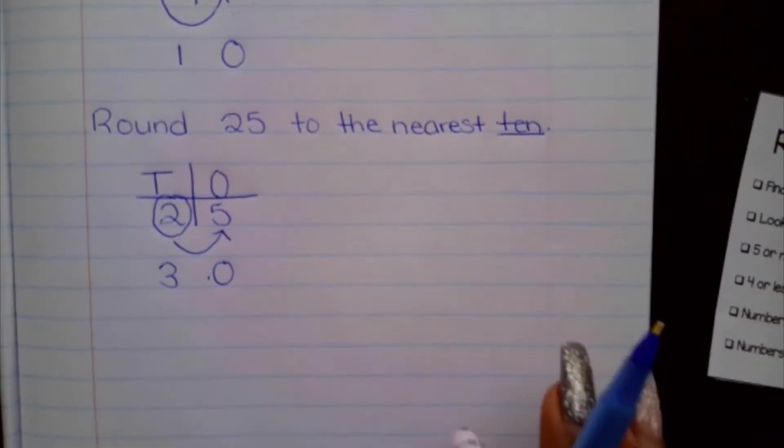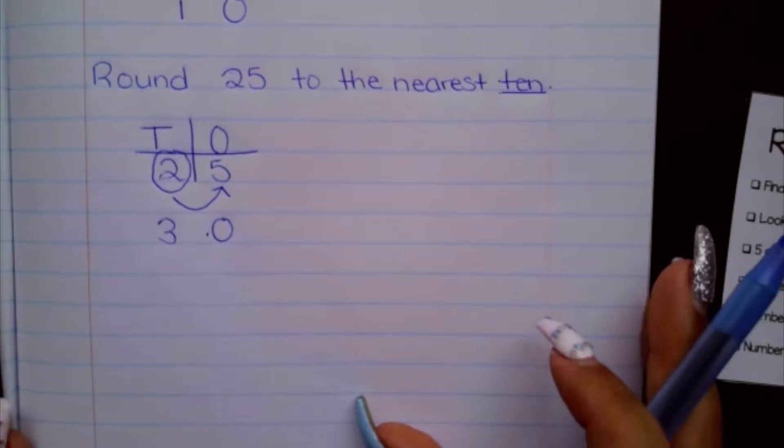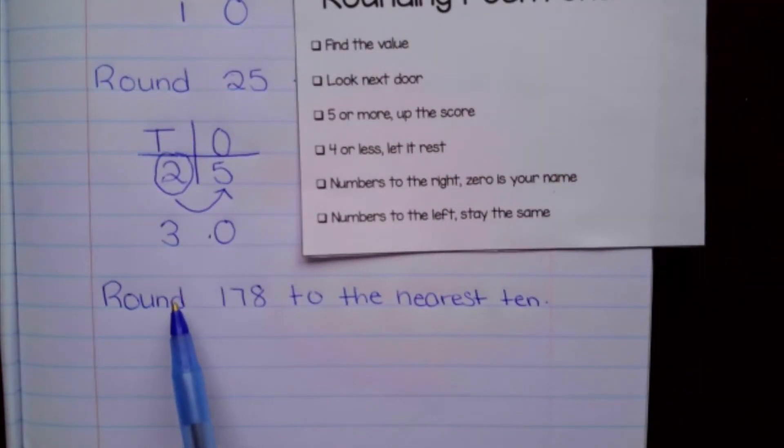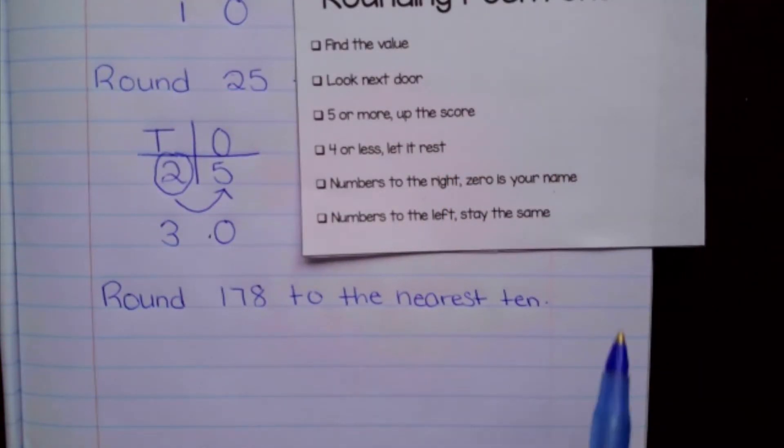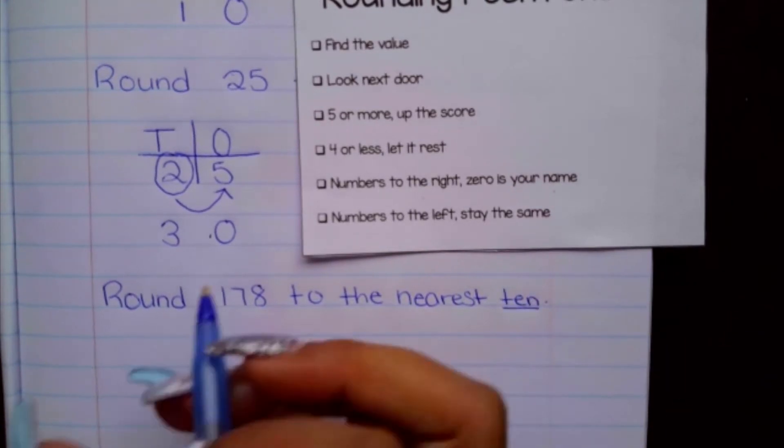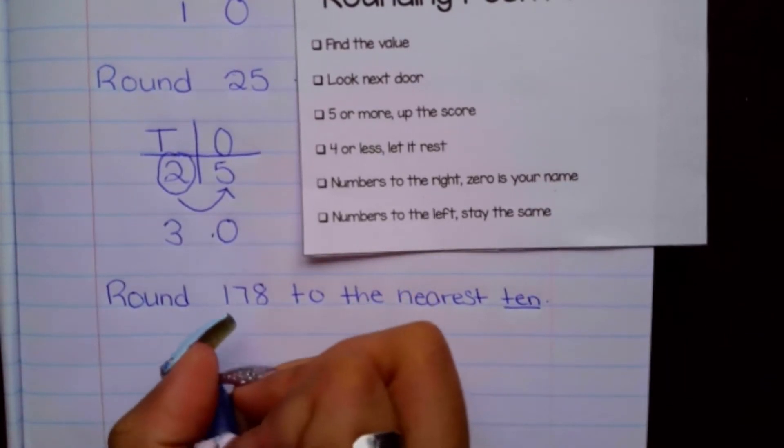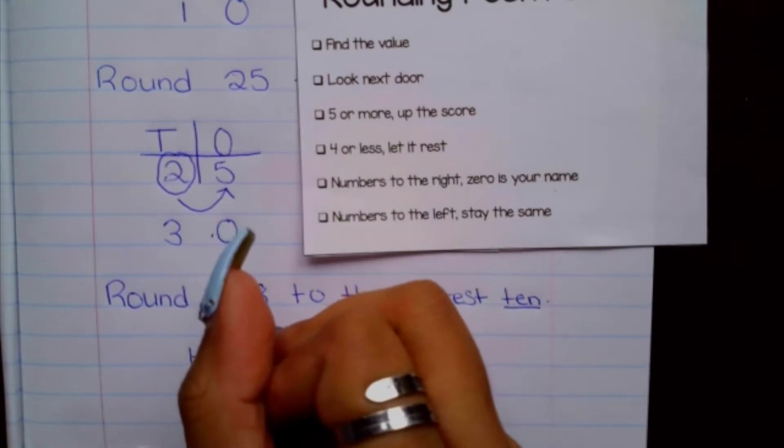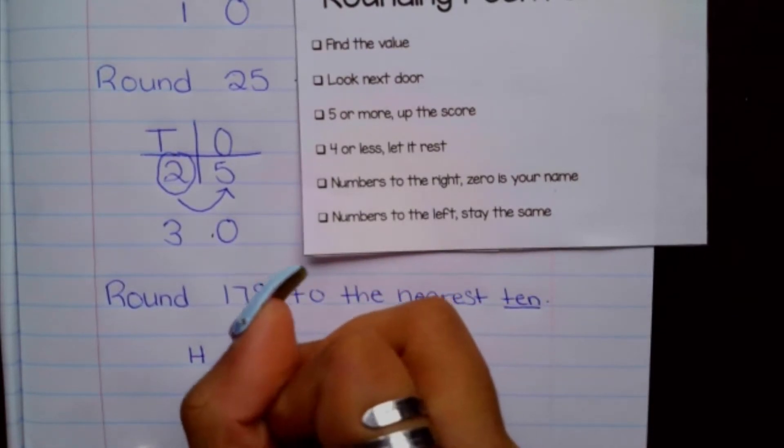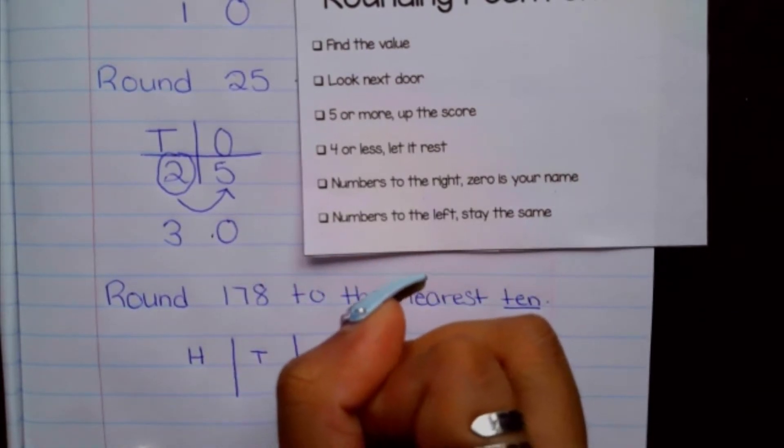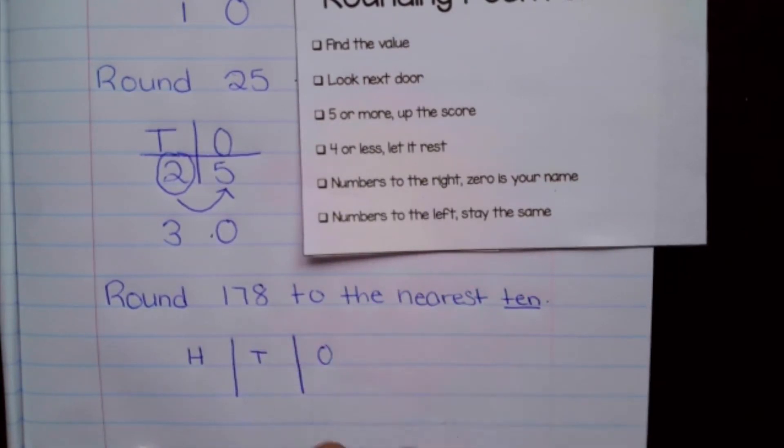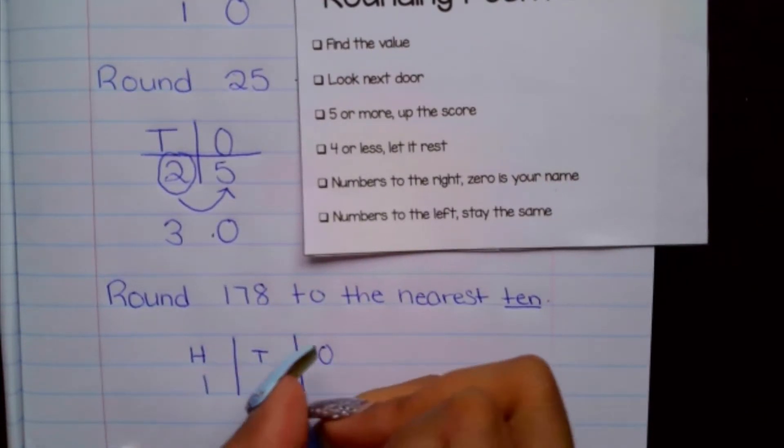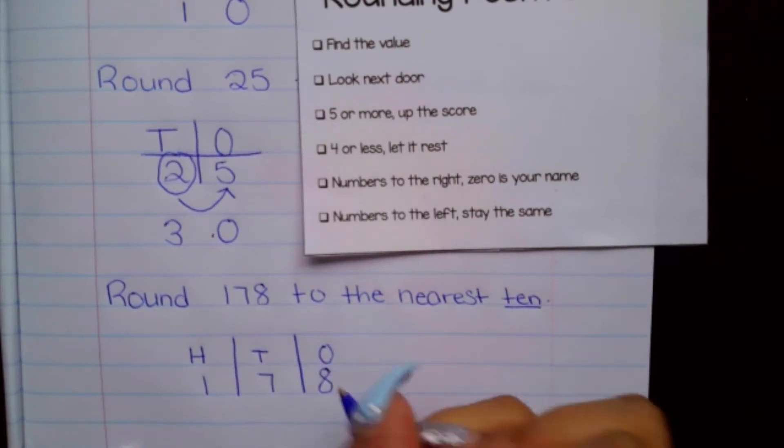So let's try with a three-digit number. Okay, so our next problem here is to round 178 to the nearest 10. So I'm going to go ahead, create my HTO chart. Hundreds, tens, and ones, and then put my value inside.